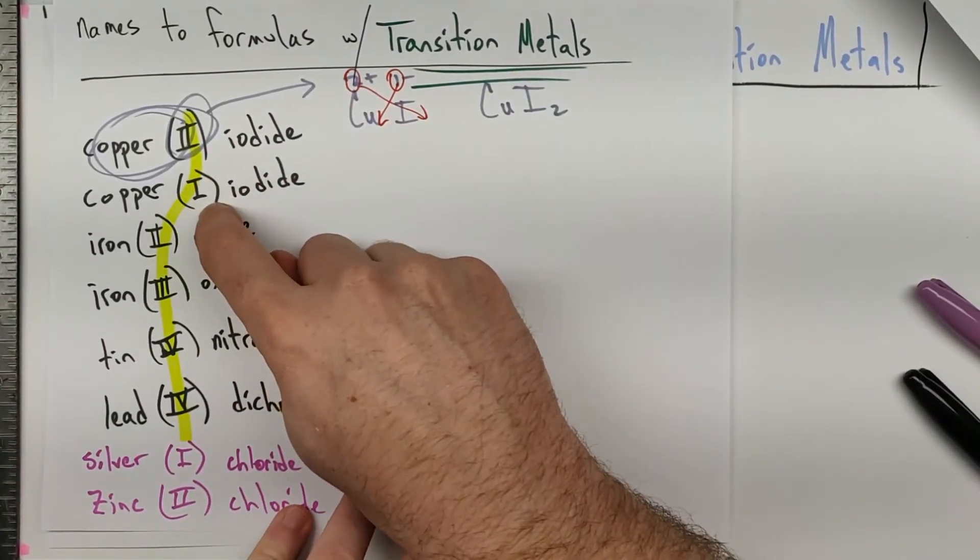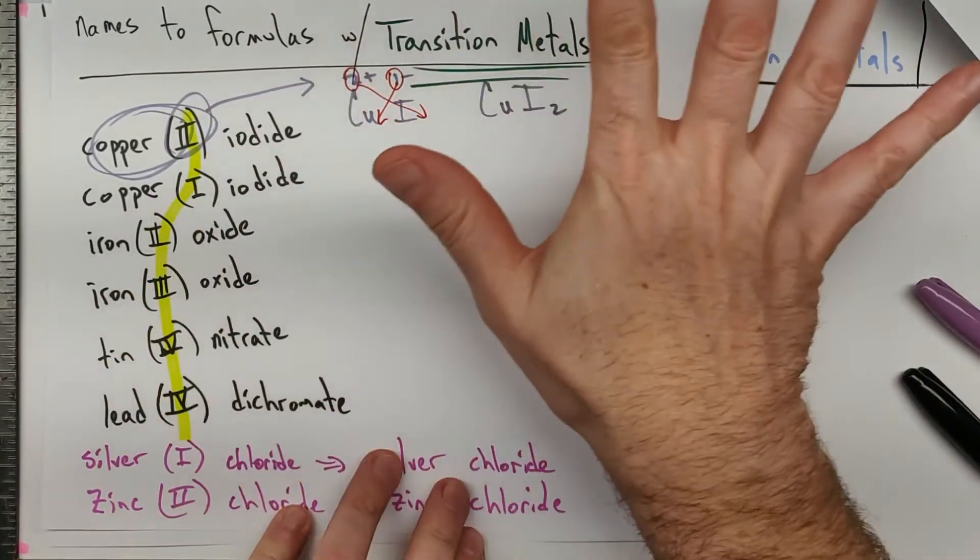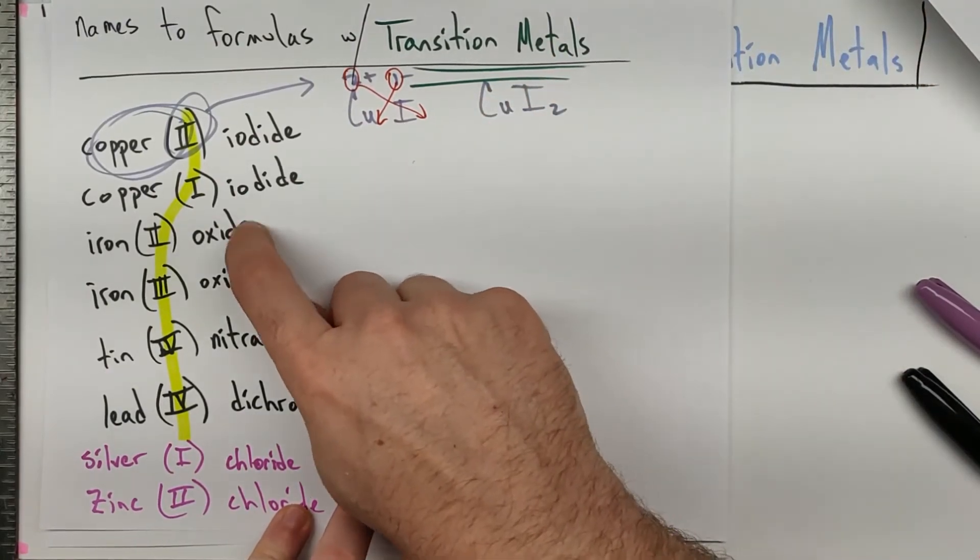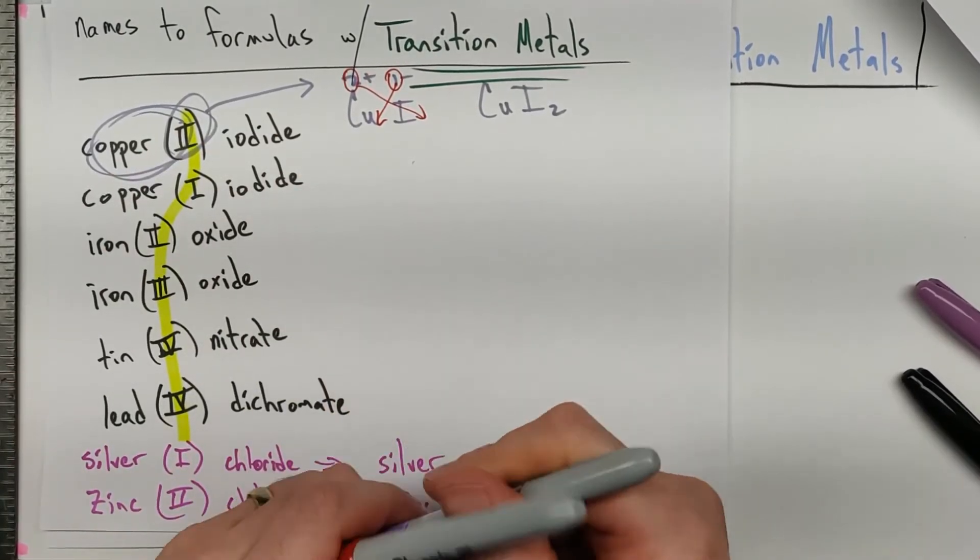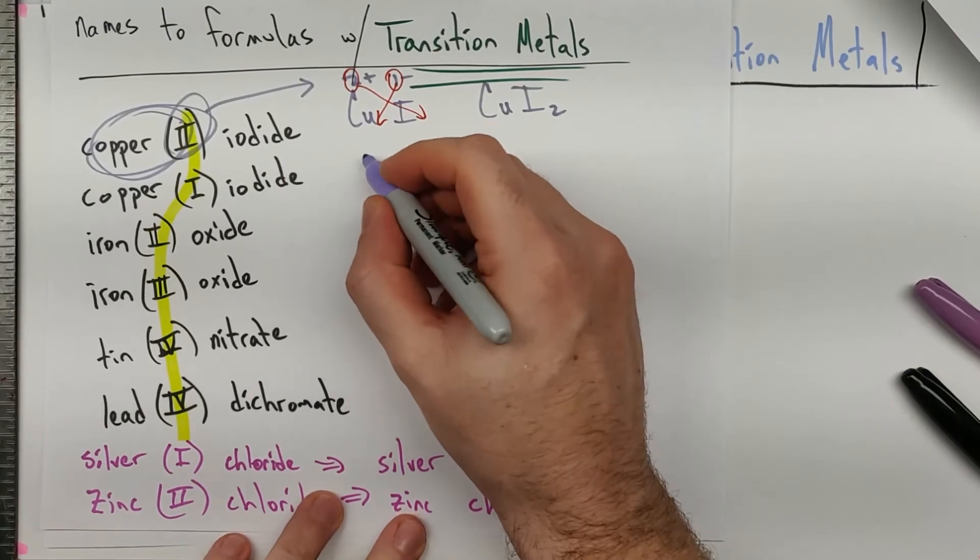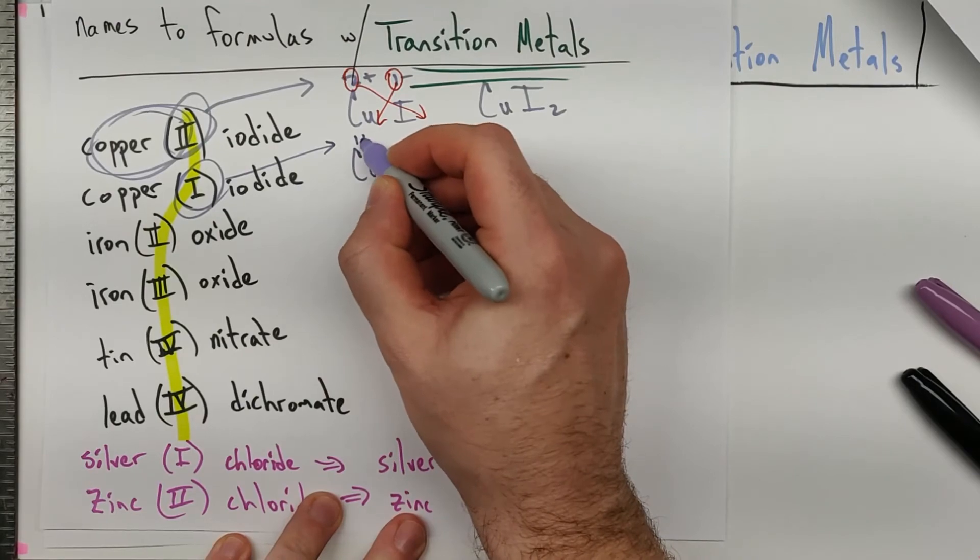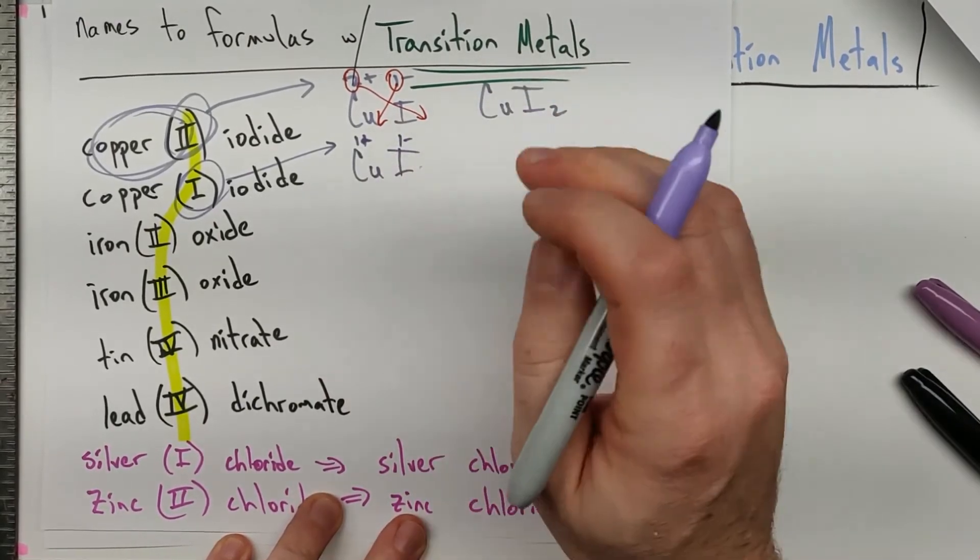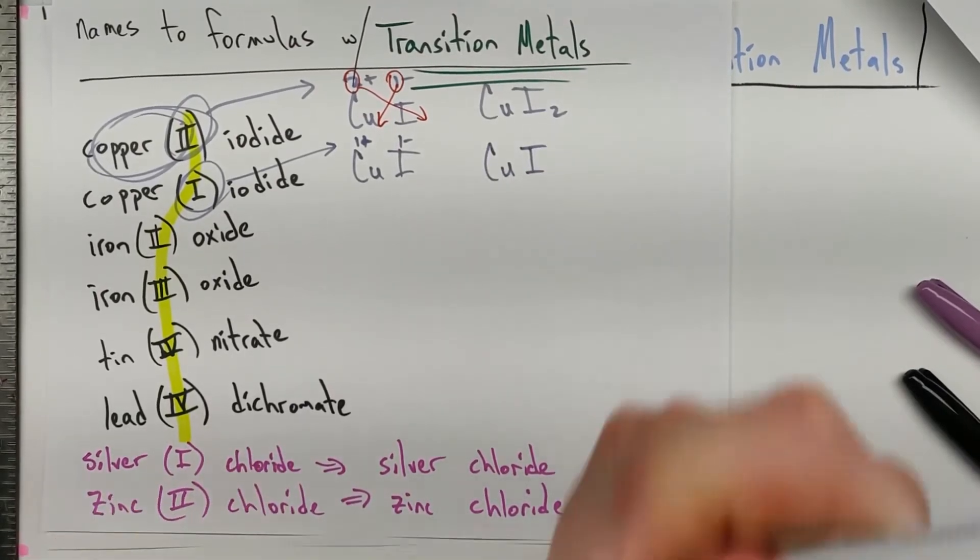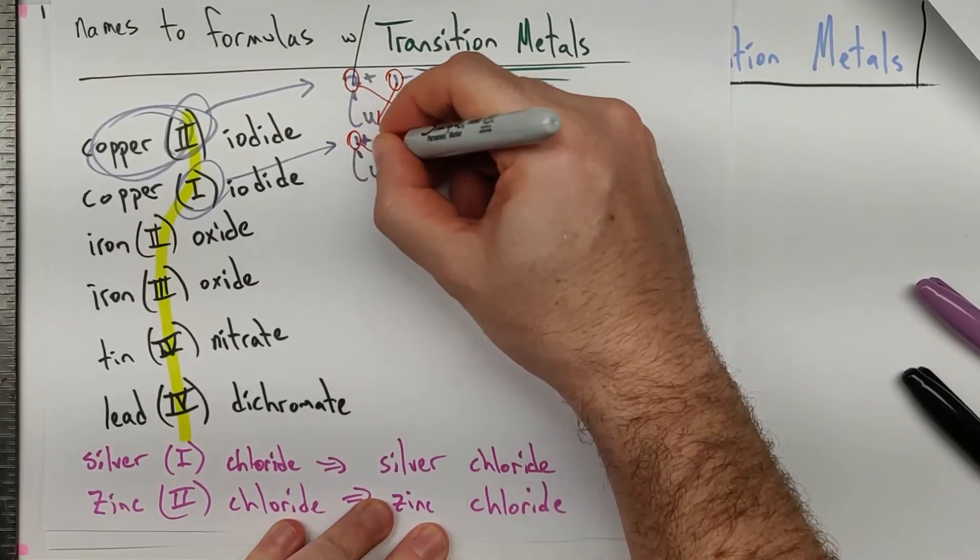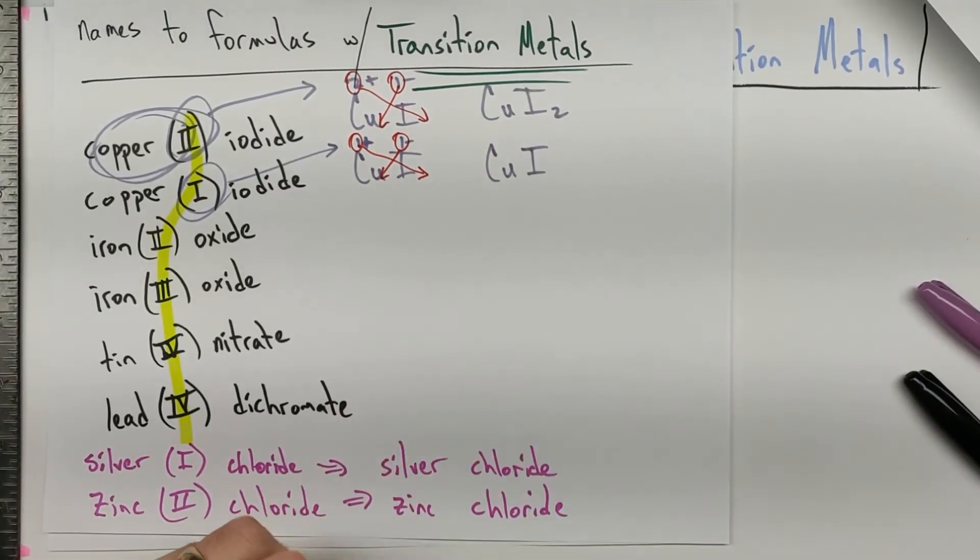The reason these roman numerals matter is because things in the transition metal area can have multiple oxidation states and it has to do with how the S sublevel and the D sublevel fill. Not important for right now. But what is important is recognizing these roman numerals are telling you a specific oxidation state for, in this case, copper, which is going to tell you a totally different compound. So if copper is a 1+, and we already know iodine is a 1- iodide, when we crisscross and reduce, we're going to get CuI, a totally different compound. And it's really important that we distinguish these things, or at least that our nomenclature system has a way to distinguish these things.